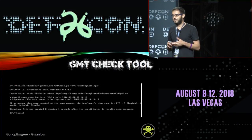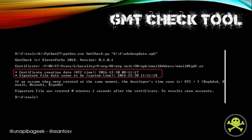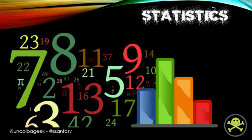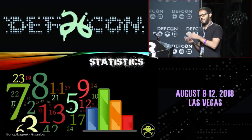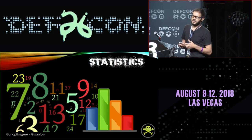We created a little Python tool that checks, on one hand, the certificate creation date in UTC time, and on the other hand, the signature file date. If we assume they were created at the same moment, the developer's timezone would be UTC plus three, because the signature file was created one second after the certificate. The result seems quite accurate. This is a fun example because in the email you can check that it's .er, which is Eritrea, and this is UTC plus three — and the certificate seems to come from .er as well, which is UTC plus three.